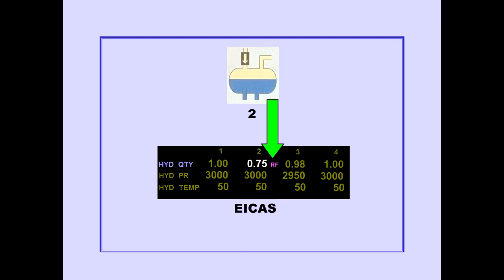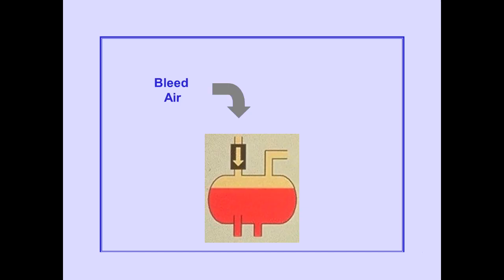When the reservoir quantity is at or below the refill level, the letters RF appear next to the quantity. This condition requires maintenance action prior to flight. Each reservoir is pressurized with bleed air to ensure a positive flow of fluid to the hydraulic pumps. A check valve maintains reservoir pressure in the event that bleed air is lost.